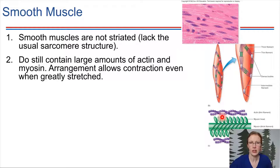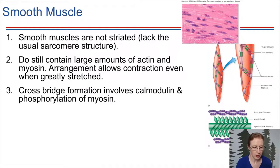But if instead we have this sort of network pattern, it's alright if the cell is stretched in one direction, we've got actin and myosin connected in the other direction as well, they can still contract. So this network pattern allows contraction even when these cells are really stretched out and distended. So that's a very good thing, very useful thing in the context of where smooth muscle is located.